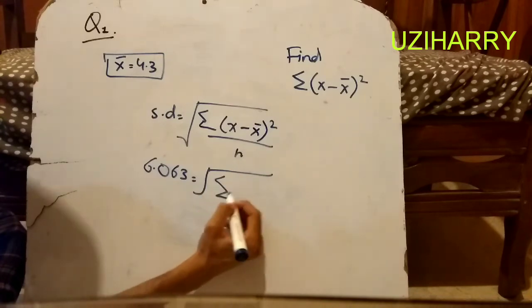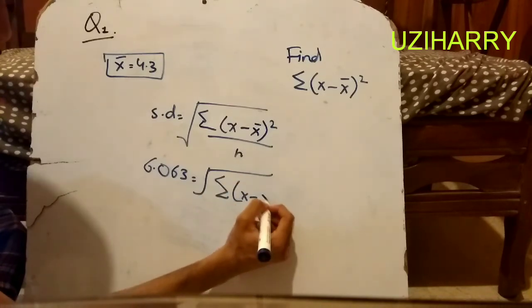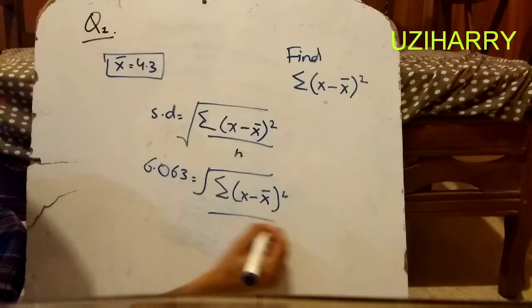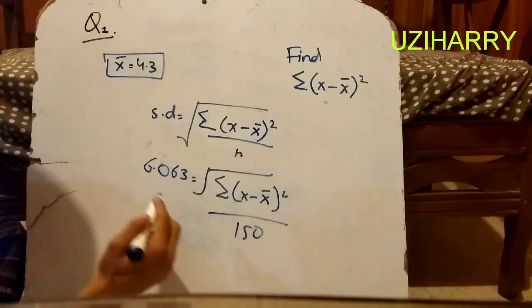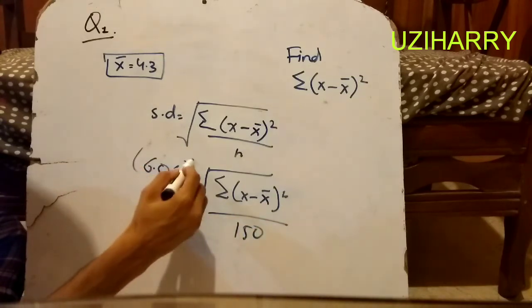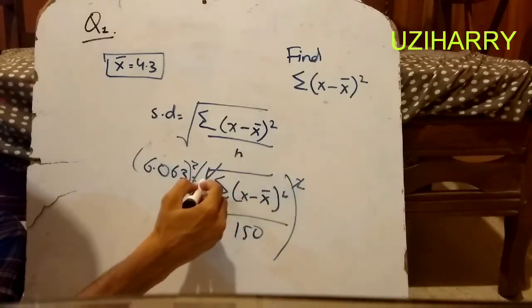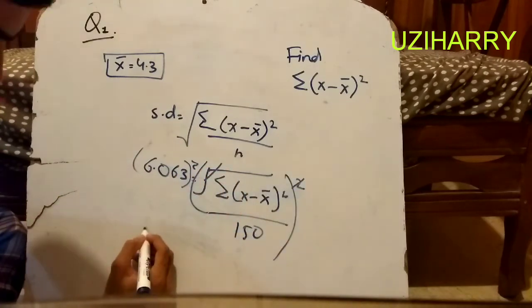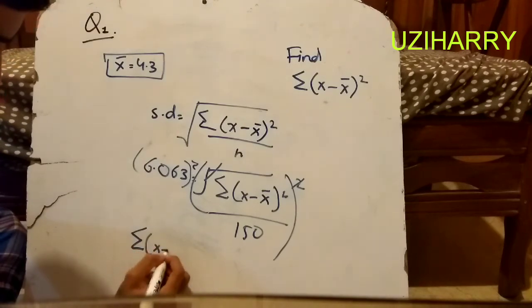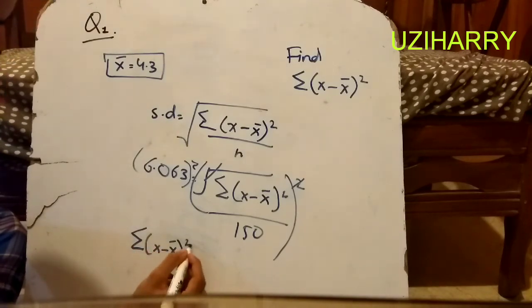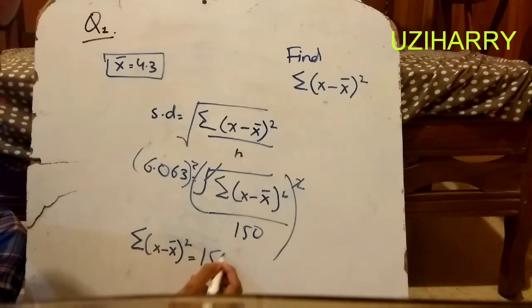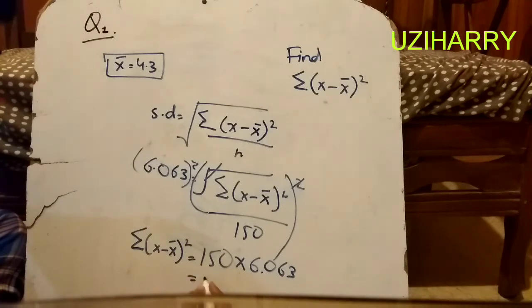By applying the square on both sides, it will be removed. Now it will be summation of (x minus mean) whole square equals 150 into 6.063 squared. The answer would be 5,514. We can take it as 3 significant figures, which is 5510.